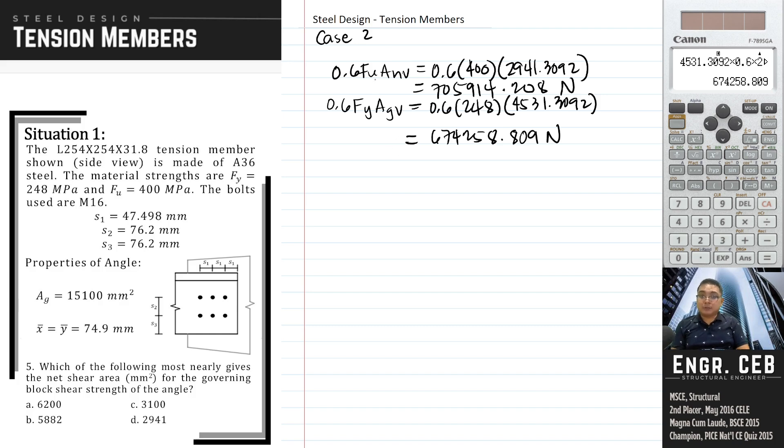In this case, the answer between the two values is 0.6 FY AGV. Therefore, we can now determine the nominal block shear strength for case 2. That is 674258.809 U BS.